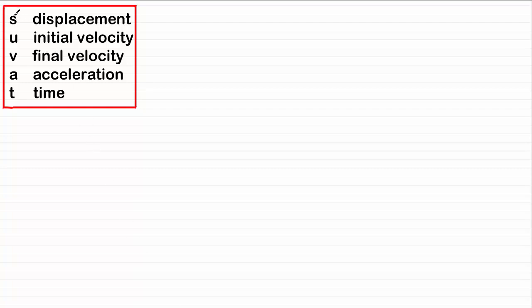You might remember that we use these variables s, u, v, a, and t to represent displacement, initial velocity, final velocity, acceleration, and time respectively.